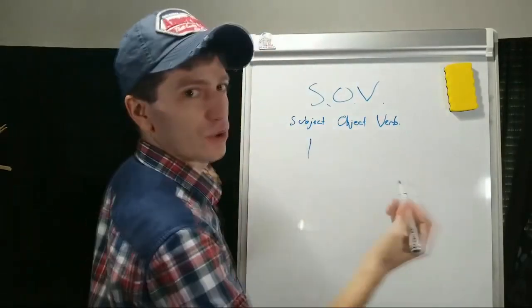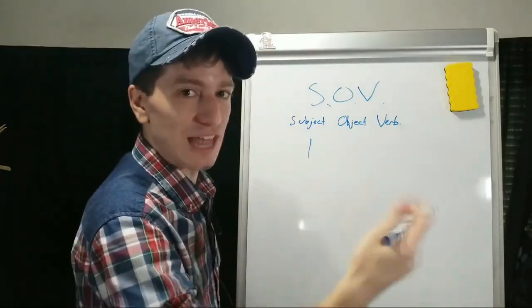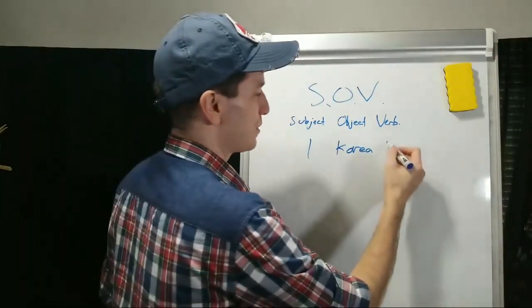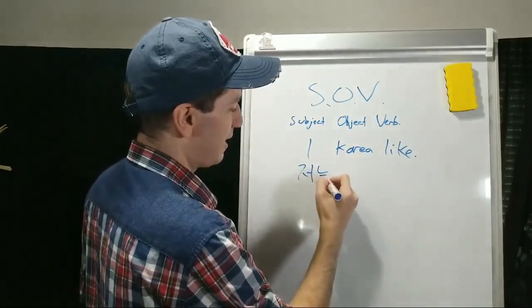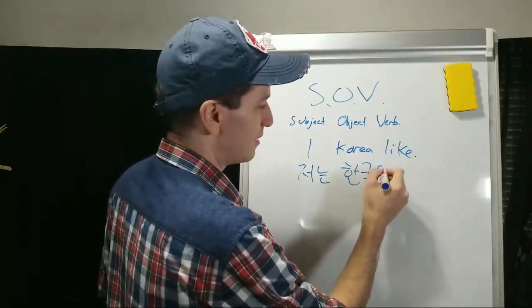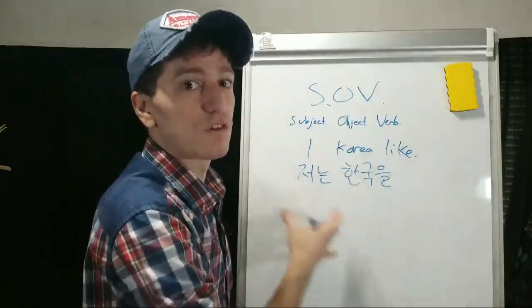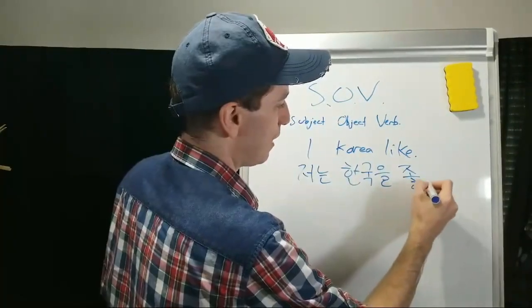So if you wanted to say I like Korea, well, what are you liking? To like is the verb, so you like Korea. And then at the end is the verb. So like 저는, which is I, 한국, Korea, and then 을, which is the object marker. We're not going to be talking about these in depth. We're just talking about overall sentence structure today. 좋아해요.